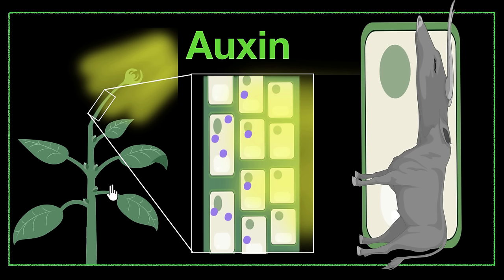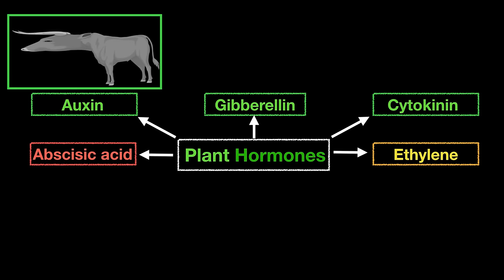That brings us to our next hormone. We know that auxin will cause the shoot to grow taller, but what makes the stem taller? That brings us to gibberlin. Gibberlin also causes the cells to elongate — it's also a growth hormone, written in green — but its major role is seen in stem elongation.